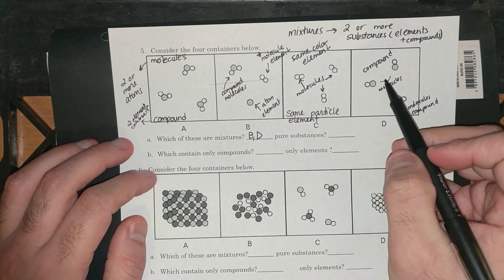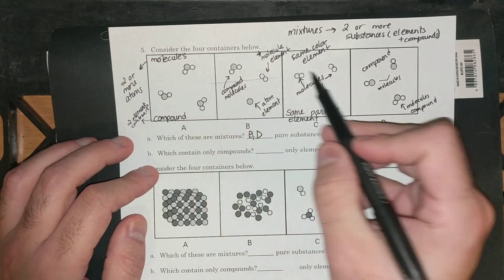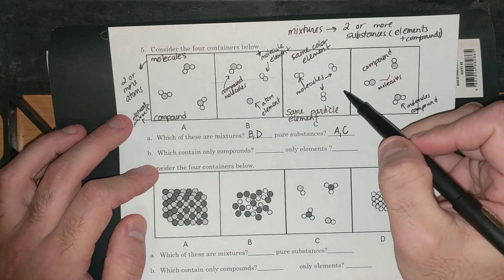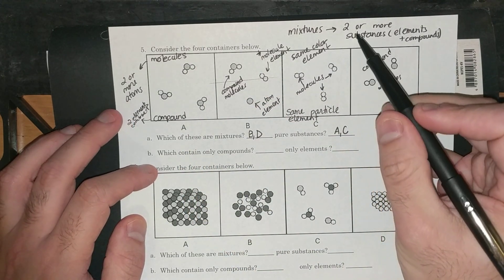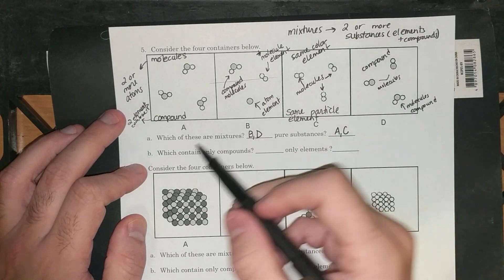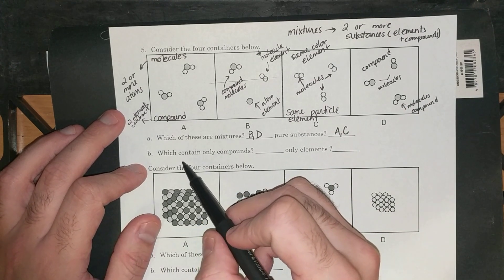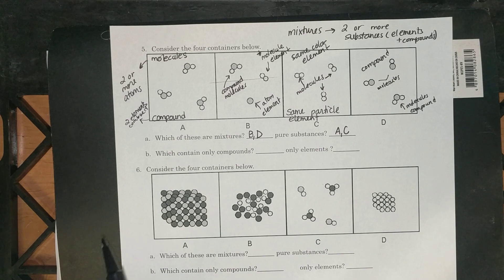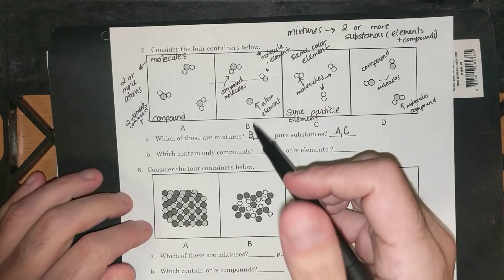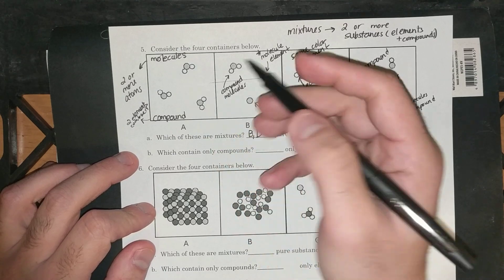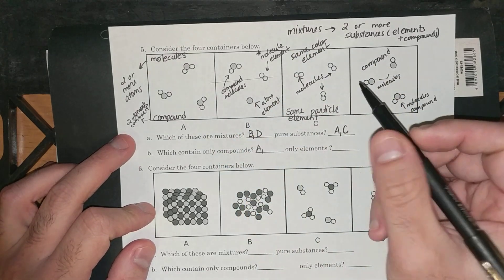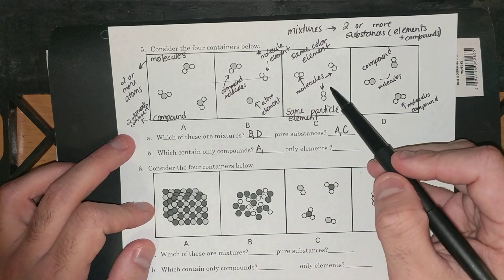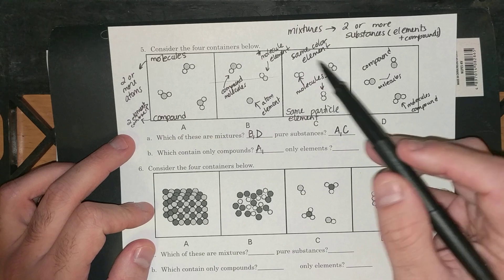Now, if B and D are mixtures, that must mean A and C are pure substances. And they are. A is a pure compound. And C is a pure element. Make sure you're able to distinguish between the two. Which contain only compounds? Meaning in the box, it didn't say pure or mixture. It just says which only contain compounds. Well, we mentioned in the first box that A only contains compounds. B doesn't only contain compounds. There's a compound and two elements.